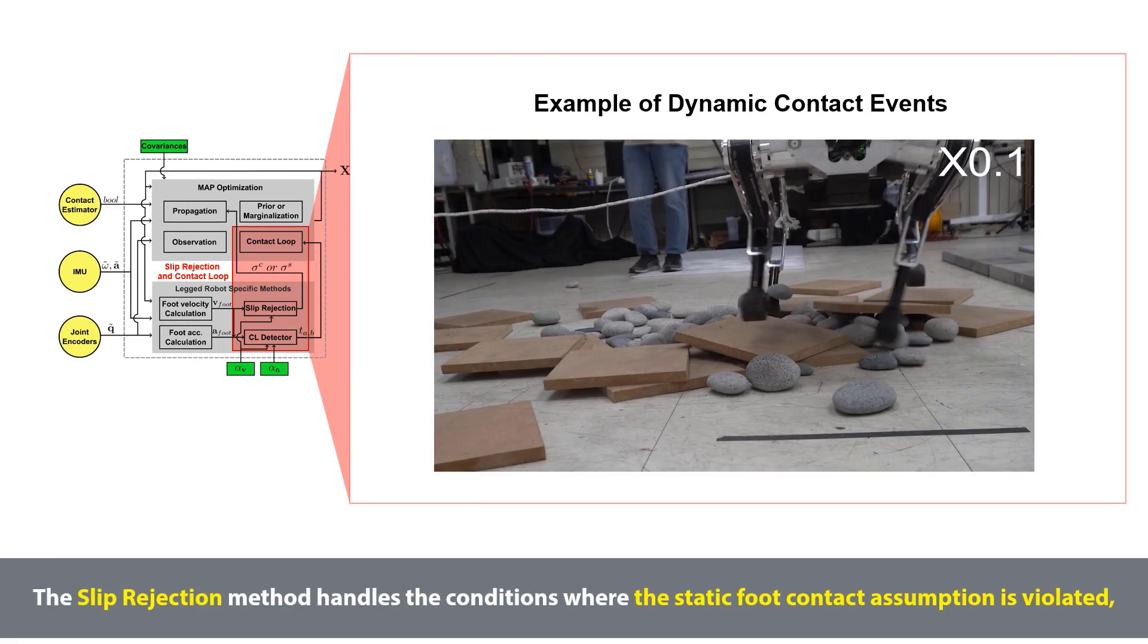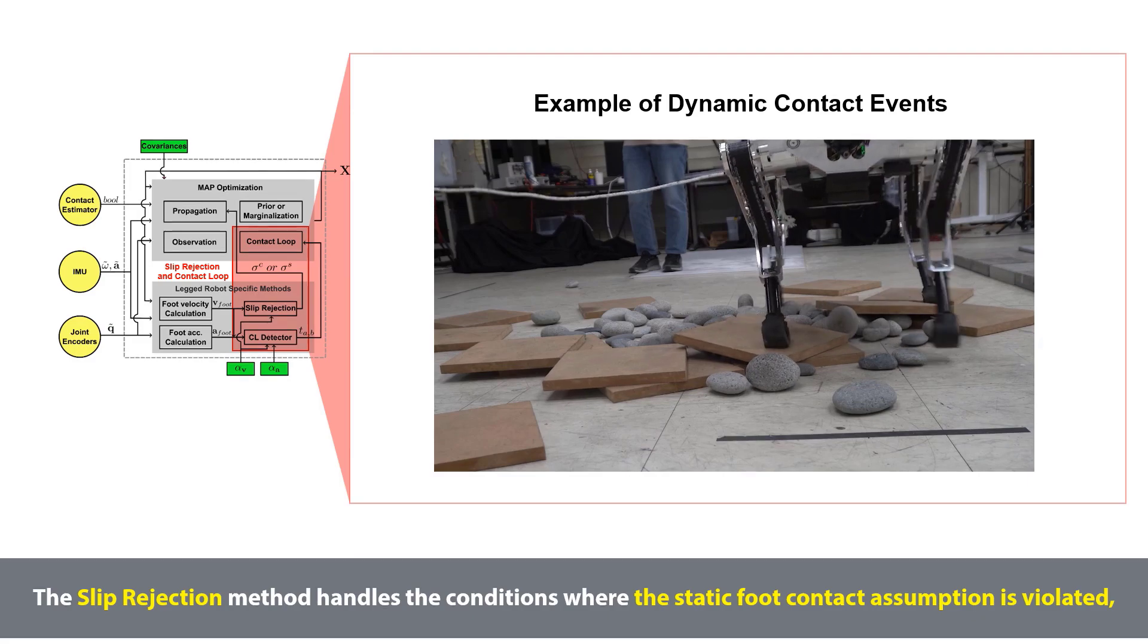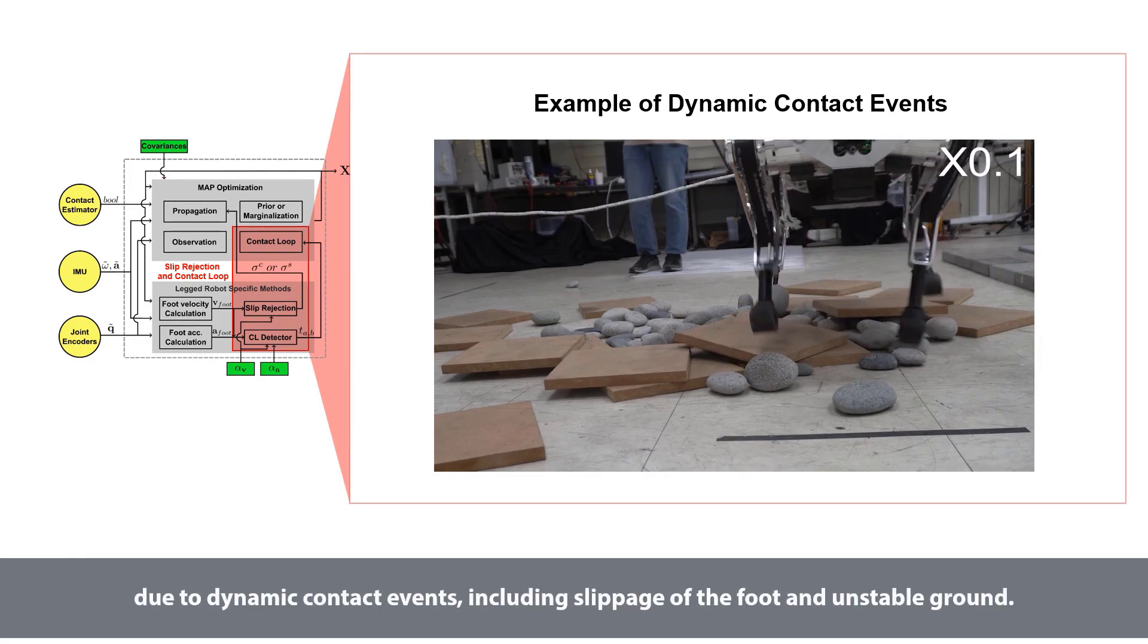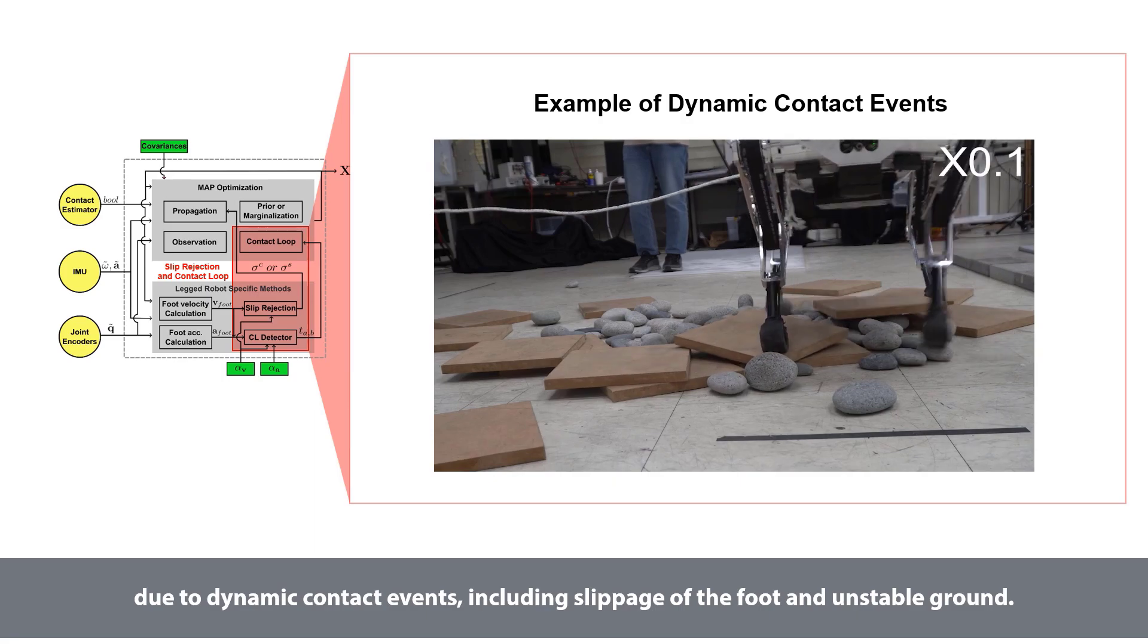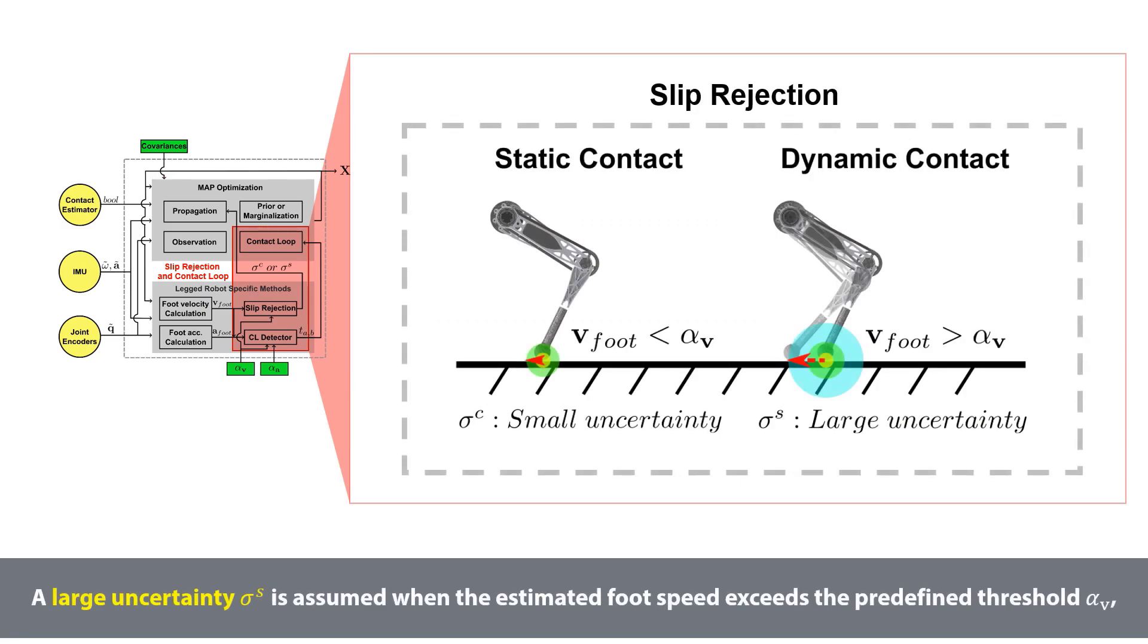The slip rejection method handles the conditions where the static foot contact assumption is violated, due to dynamic contact events, including slippage of the foot and unstable ground. A large uncertainty sigma s is assumed when the estimated foot speed exceeds the predefined threshold alpha v, whereas a small uncertainty sigma c is presumed when the estimated foot speed is lower than the threshold.